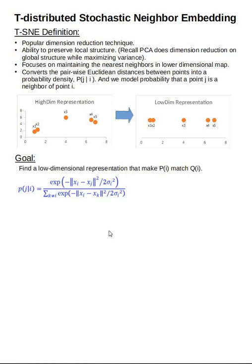Pi fundamentally represents the probability of point J being a neighbor of point I. So P(J|I) represents the probability that a point XJ is a neighbor of point XI.